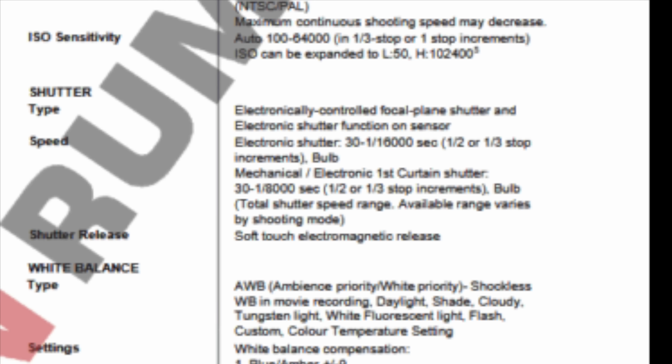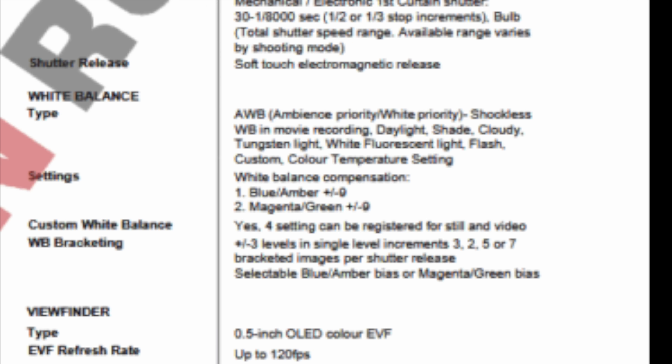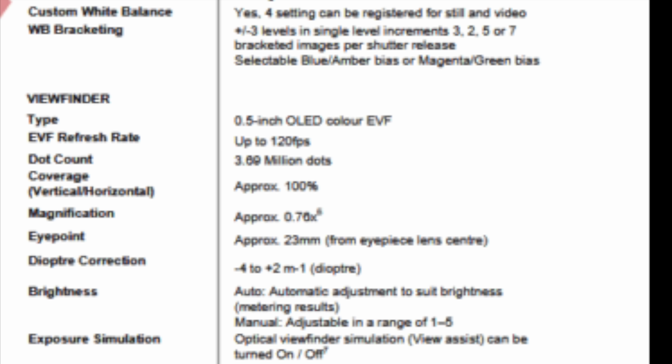The shutter type and speeds: the Canon EOS R6 Mark III has an electronically controlled focal plane shutter and electronic shutter function on the sensor, along with mechanical and electronic first curtain shutter, between 30 and 1/8000th of a second. No surprises under white balance — we get automatic white balance for various shooting modes: daylight, shade, cloudy, tungsten light, and so on. The viewfinder is an OLED EVF with up to 120 frames per second on 3.69 million dots.